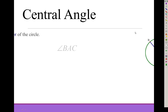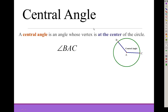A central angle is an angle whose vertex is at the center of a circle. So if this is circle A, where A is the center of the circle, angle BAC is a central angle.